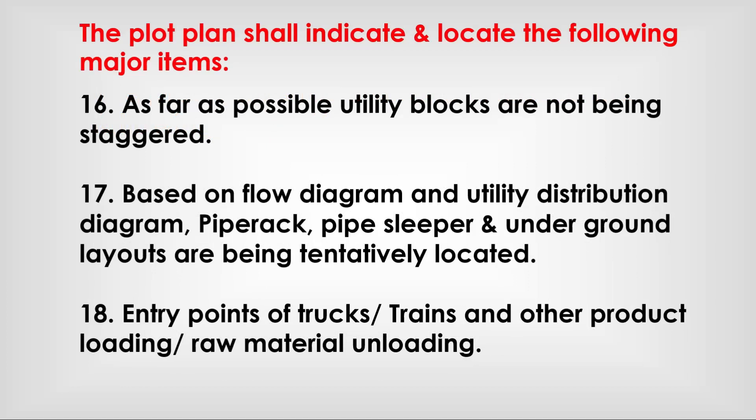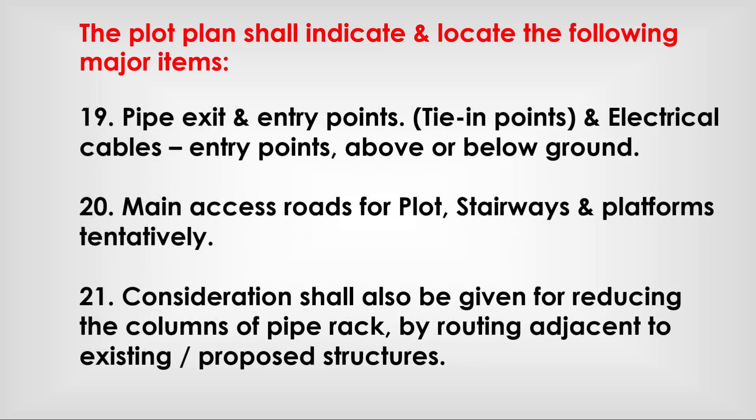Based on flow diagrams and utility distribution diagrams, pipe racks, pipe sleepers, and underground layouts are tentatively located. Entry points for trucks, trains, and other product loading and raw material unloading are defined. Pipe entry/exit points, electrical cable entry points above ground, main access roads, stairways, and platforms are tentatively planned. Consideration shall also be given to reducing pipe rack columns by routing adjacent to existing or proposed structures.